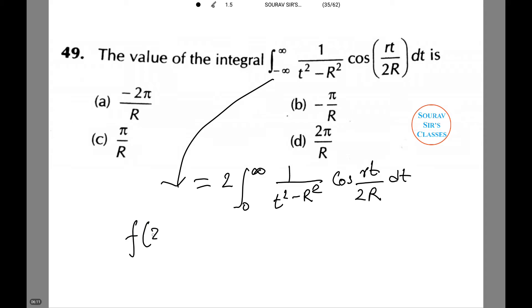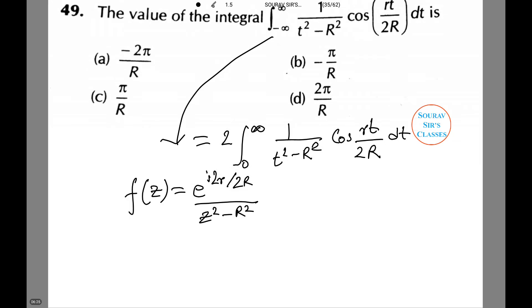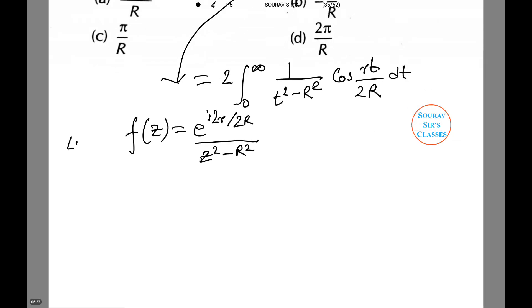Therefore 2 ranging from 0 to infinity, 1 by t square minus R square cos rt by 2 capital R dt. Or f of z equals to e to power i2r by 2 capital R whole divided by z square minus capital R square. The poles are given by z square minus R square equals to 0, or z equals to plus minus capital R.